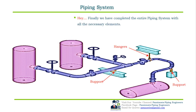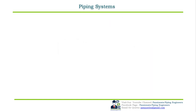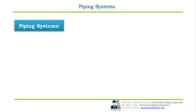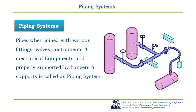We have finally completed the entire piping system with all the necessary elements. This is how the entire system looks after placing all piping elements. A piping system can therefore be defined as: pipes when joined with various fittings, valves, instruments, and mechanical equipments, and properly supported by hangers and supports, is called a piping system.